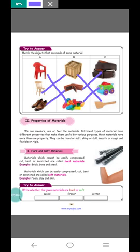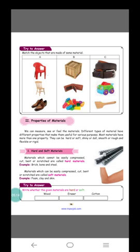Most materials have more than one property. They can be hard or soft, shiny or dull, smooth or rough, and flexible or rigid.